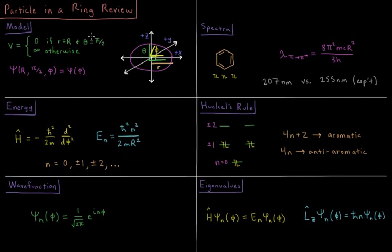This reduces our three-dimensional spherical polar wave function down to a one-dimensional wave function in the azimuthal angle phi in spherical polar coordinates.